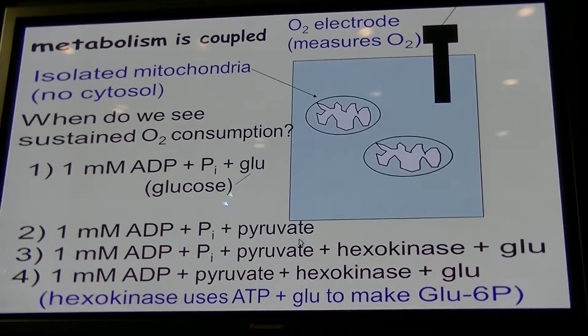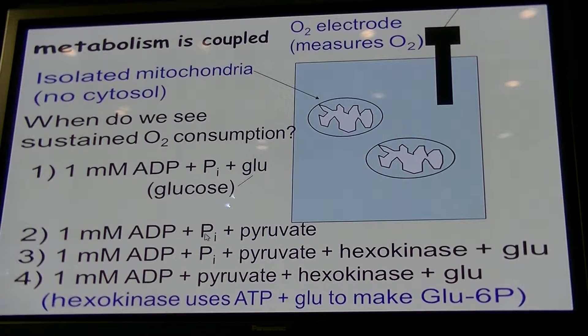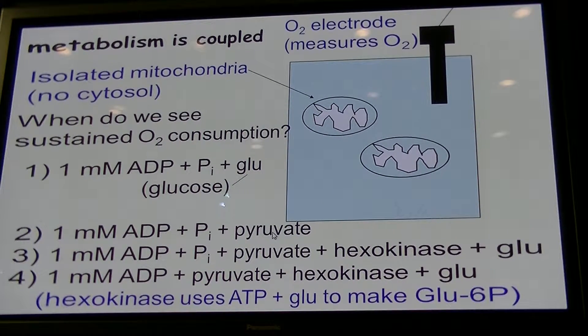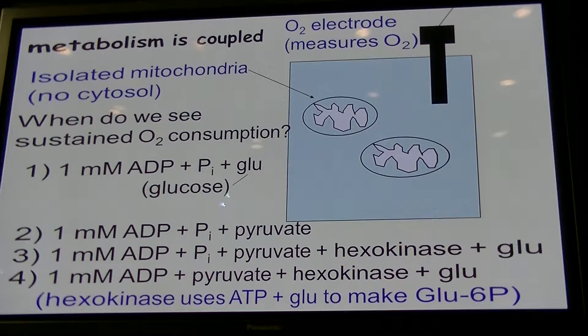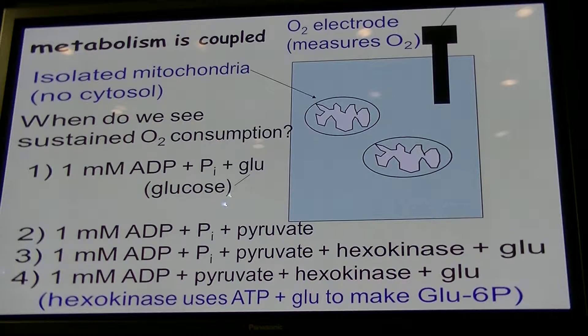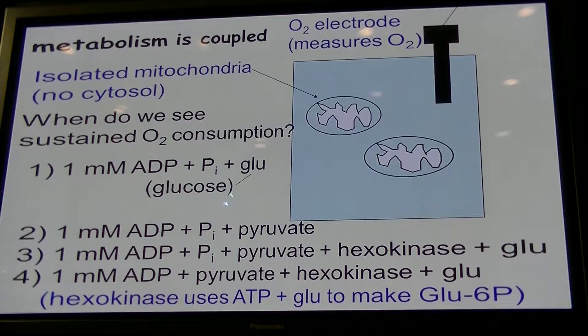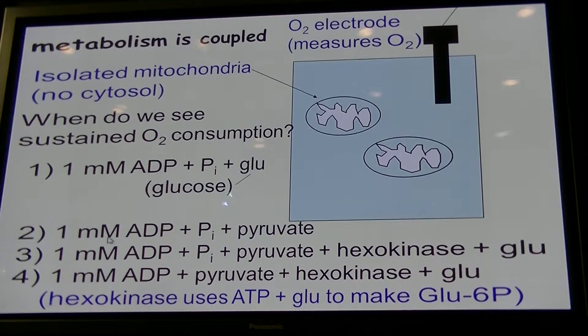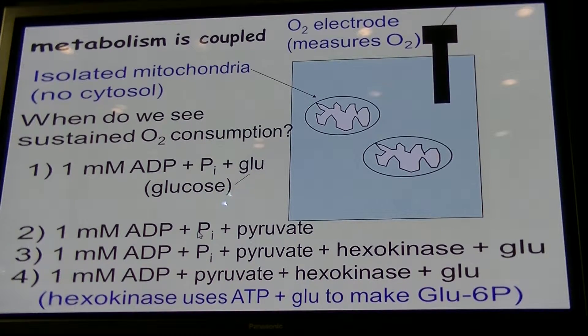So if we go to option two, it's better because there we give ADP and inorganic phosphate and pyruvate. So pyruvate is a substrate. The electron transport chain has something to start with. ADP and Pi has a reason to synthesize ATP and to take away the proton gradient so it's not so steep. So the electron transport chain tries to pump it back up. Ultimately, that leads to the consumption of oxygen. But pretty soon, if this amount of ADP and inorganic phosphate, everything is converted to ATP, the system will stop.